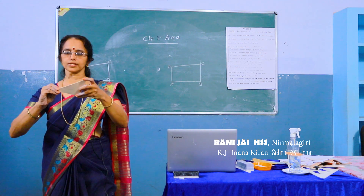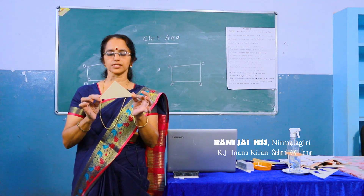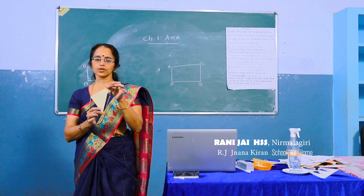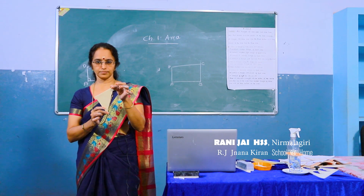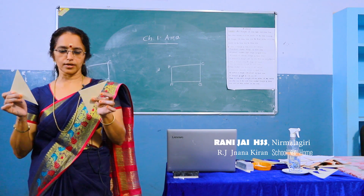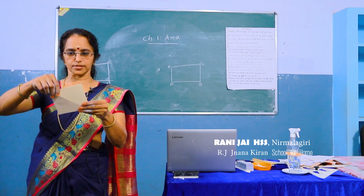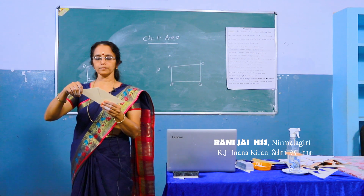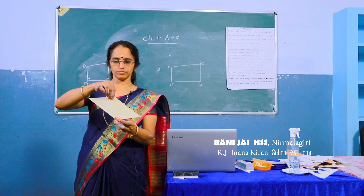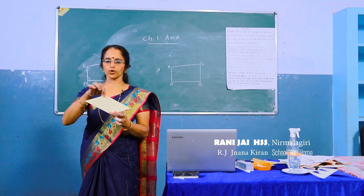Now when we join one over the other, we get two similar, same triangles. They have equal area. Now can you make a square? Yes, we can make a square like this. We can also make a parallelogram whose area is the same as the area of the square.